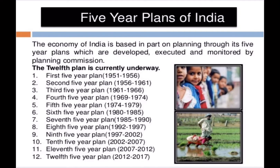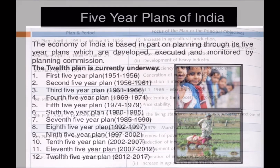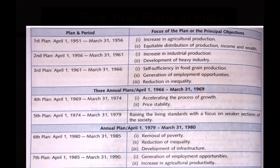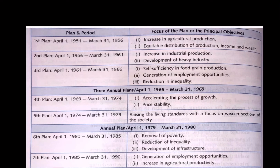Let's discuss the principal objectives of each plan. The First Plan, from 1951 to 1956, had a major goal of increasing agricultural production — naturally, any country would want to first become self-sufficient in growing its own food. The Second Plan, from 1956 to 1961, had a major focus on industrial production. The Third Plan, from 1961 to 1966, focused on self-sufficiency in food grain production.